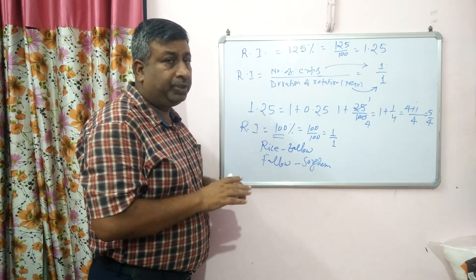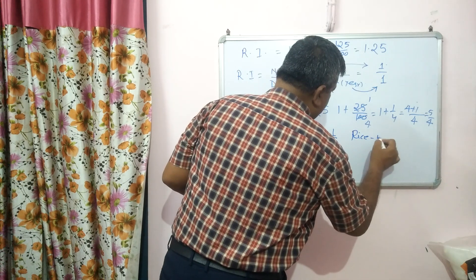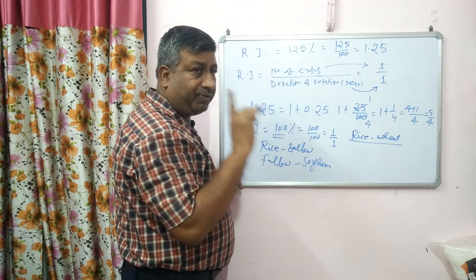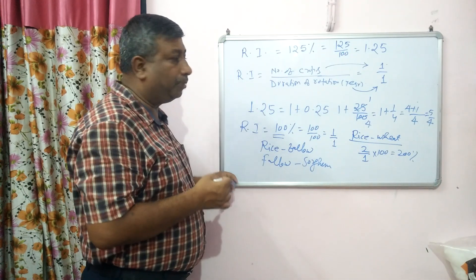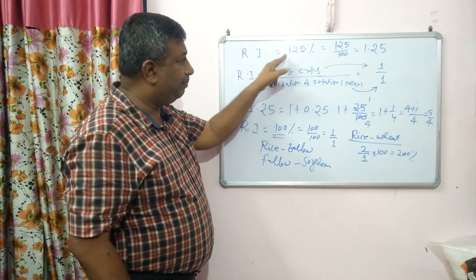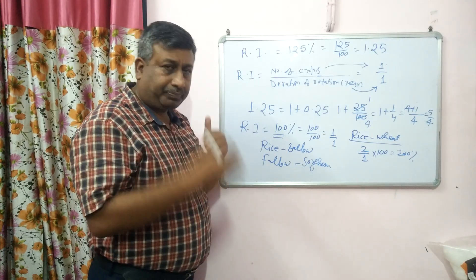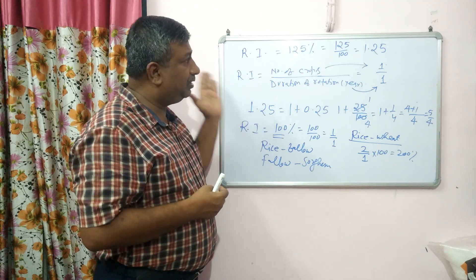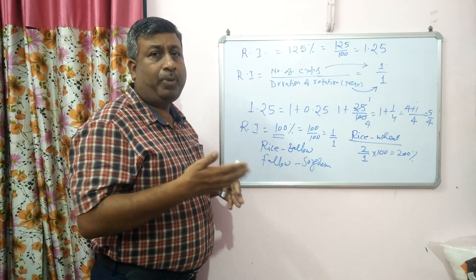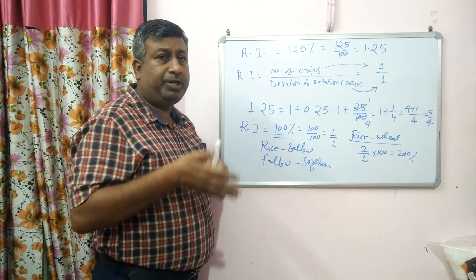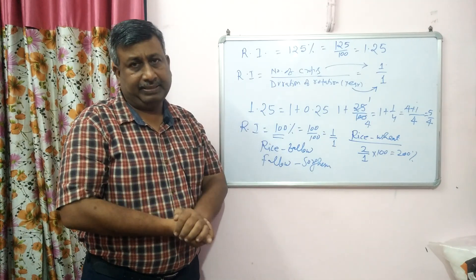If we are growing two crops, like rice-wheat — two crops with duration of one year — then two divided by one, multiplied by 100, is 200 percent. So 200 percent means two crops are grown in one year. If the rotation intensity is not a perfect multiple of 100, convert to decimal and then to fraction. From the fraction we can find the number of crops and the duration. In examinations, questions like 'if RI is 167 percent, how many crops are grown in how many years' are commonly asked. This is the meaning of rotation intensity. Thank you very much.